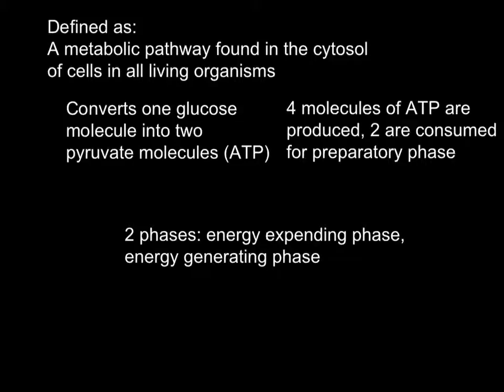Four molecules of ATP are actually produced, but two are consumed for the preparatory phase. Glycolysis is separated into two phases. The energy expending phase is where two ATP are used for every glucose molecule that enters into glycolysis.